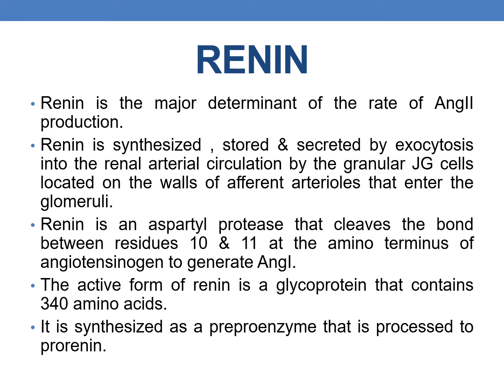Renin is stored and secreted by exocytosis through granular JG cells. Renin is an aspartyl protease that cleaves the bond between residues 10 and 11 at the amino terminus of angiotensinogen to generate angiotensin 1. The active form of renin is a glycoprotein that contains 340 amino acids, and it is synthesized as a pre-proenzyme that is processed to pro-renin.